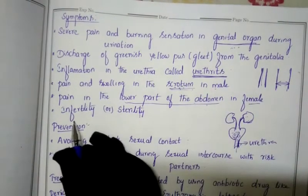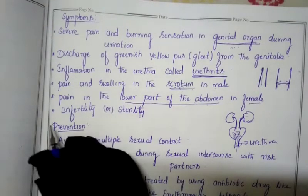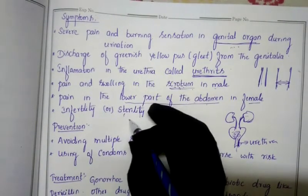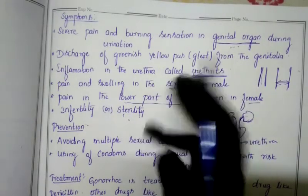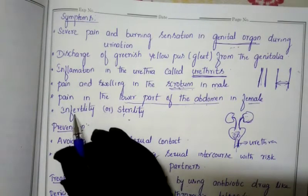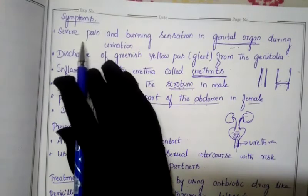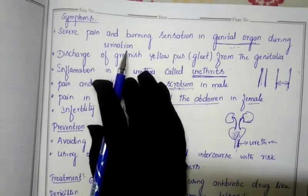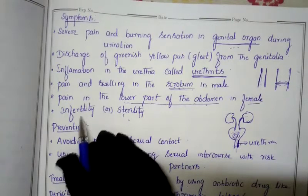Finally, if untreated, the person may become infertile or sterile — unable to give birth to children. In earlier times, when there were no doctors or treatments, the disease often led to infertility. Today, as soon as the first symptoms like pain and burning during urination appear, one should consult a doctor and take correct treatment.